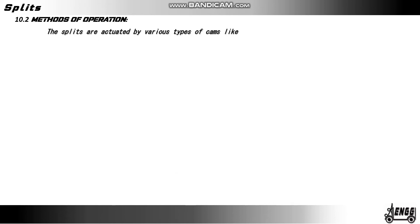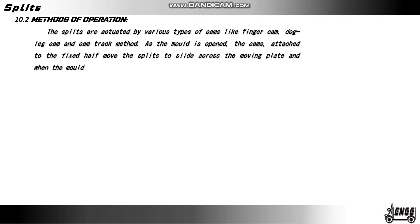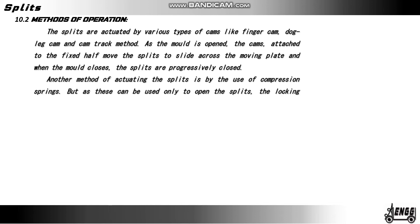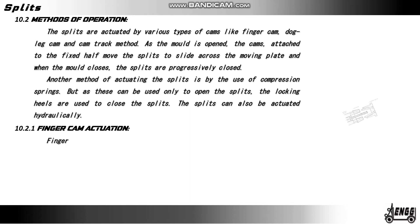Methods of operation: the splits are actuated by various types of cams, such as finger cam, dog leg cam, and cam track. As the mold opens, the cams attached to the fixed half move the split to slide across the moving plate, and when the mold closes the splits are progressively closed. Another method of actuating the split is by the use of compression springs, but as these can only be used to open the split, locking heels are used to close the split. The splits can also be actuated hydraulically.